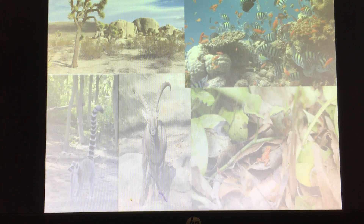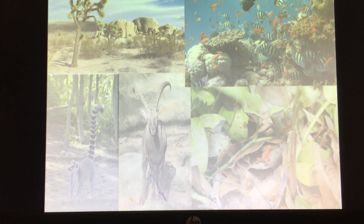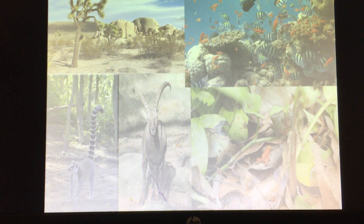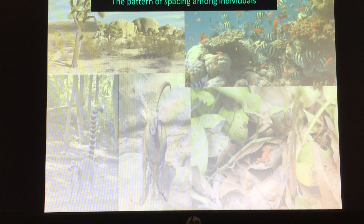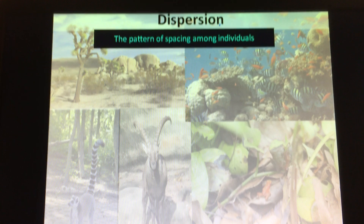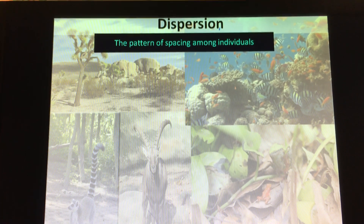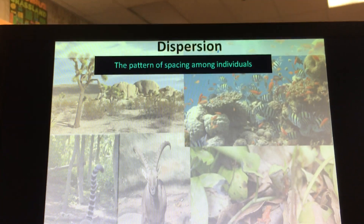Another characteristic of populations is dispersion, or how they're spread out. Dispersion is the pattern of spacing among individuals in a population.